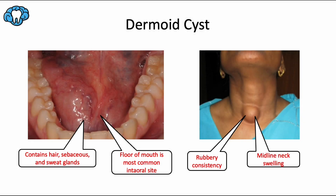Next, we'll talk about two inclusion cysts that usually appear on the head and neck, but can uncommonly appear in the oral cavity as well. We'll start with the dermoid cyst, which, like Epstein's Pearl, develops because epithelium becomes trapped or included within connective tissue during embryogenesis. These dermoid cysts can contain a lot of things — hair, sebaceous or oil glands, sweat glands, and even possibly tooth structure.